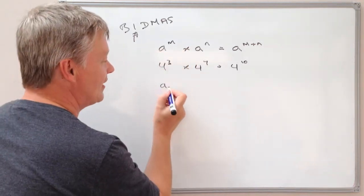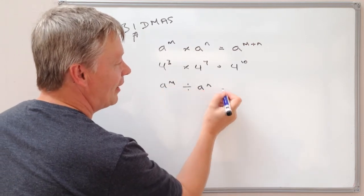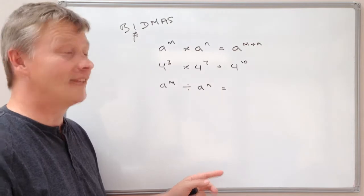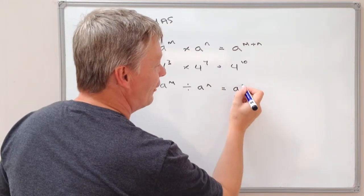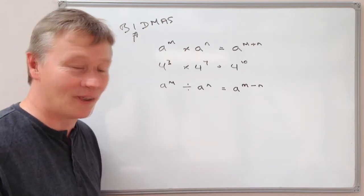The second rule you got to remember is a to the power of m, divided by a to the power of n, equals a to the power of m minus n. So let's give you a proper example of that.